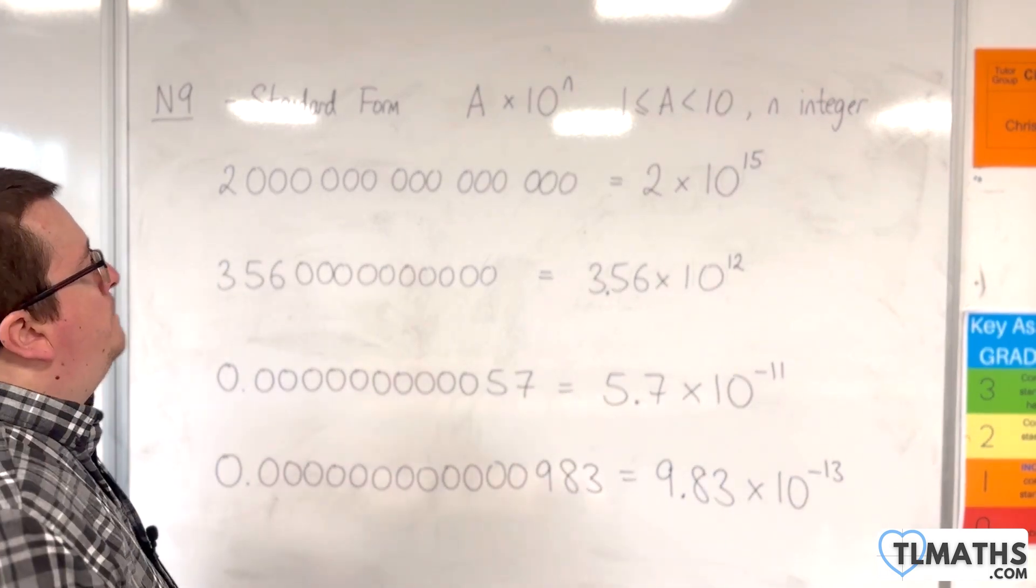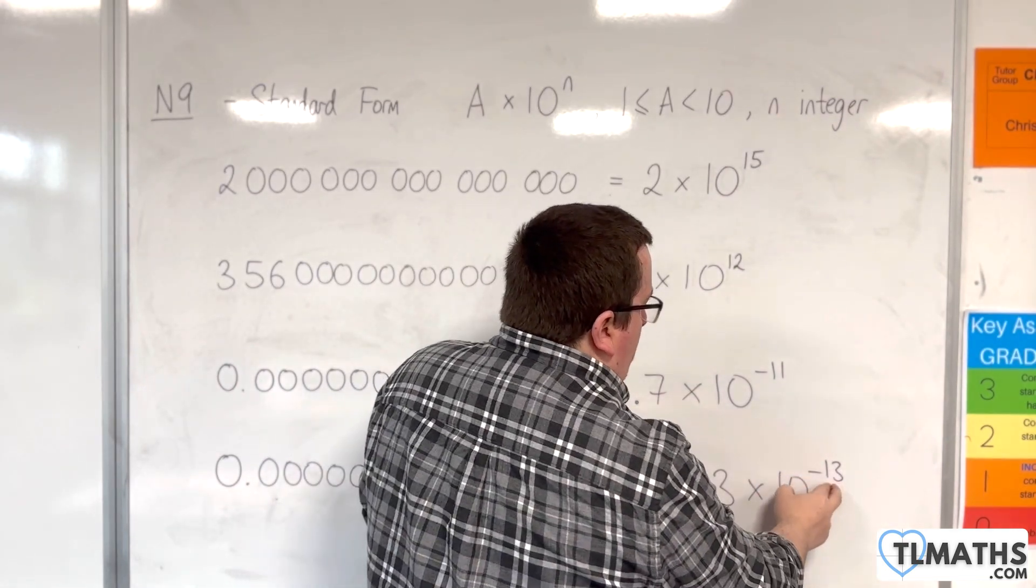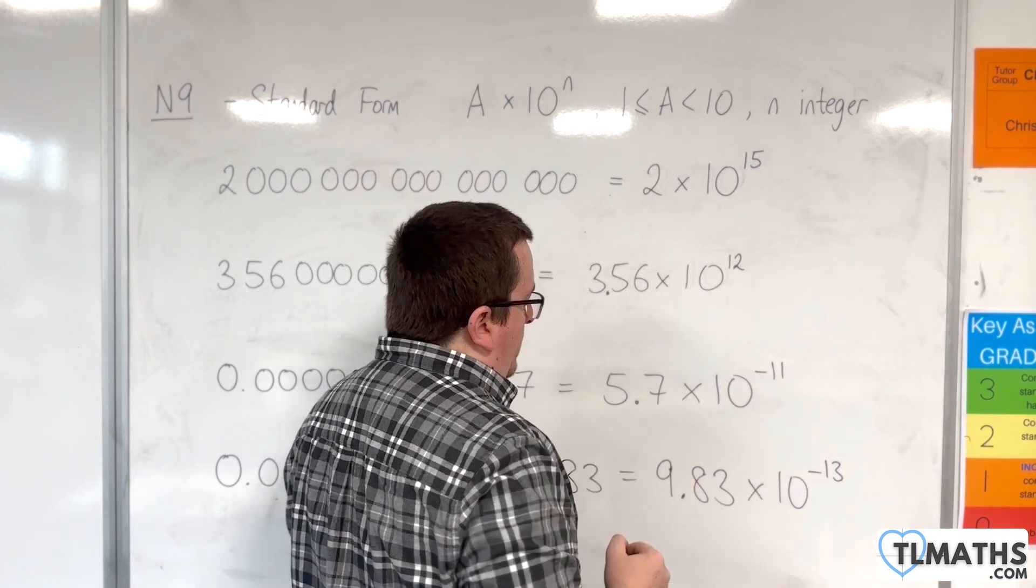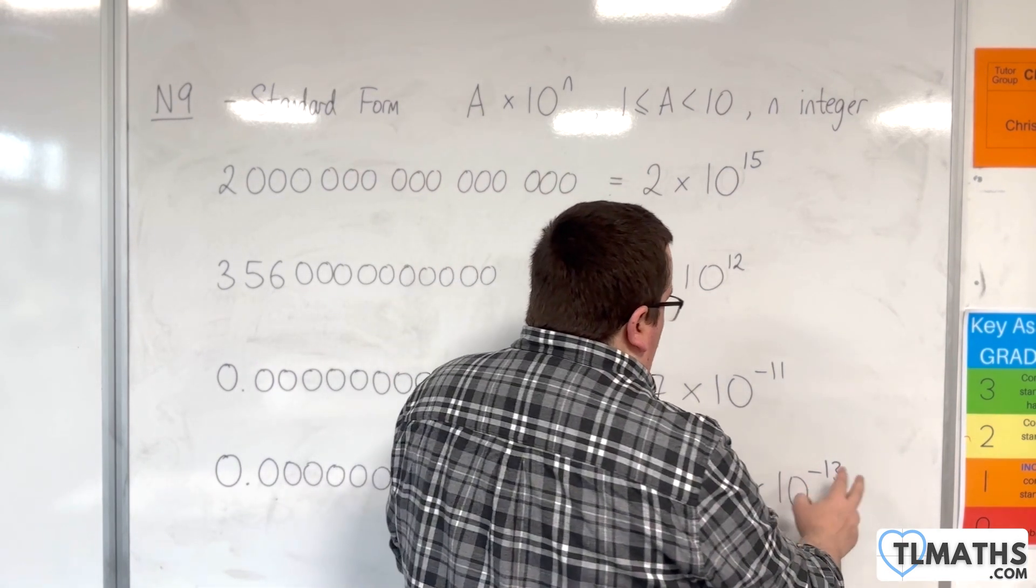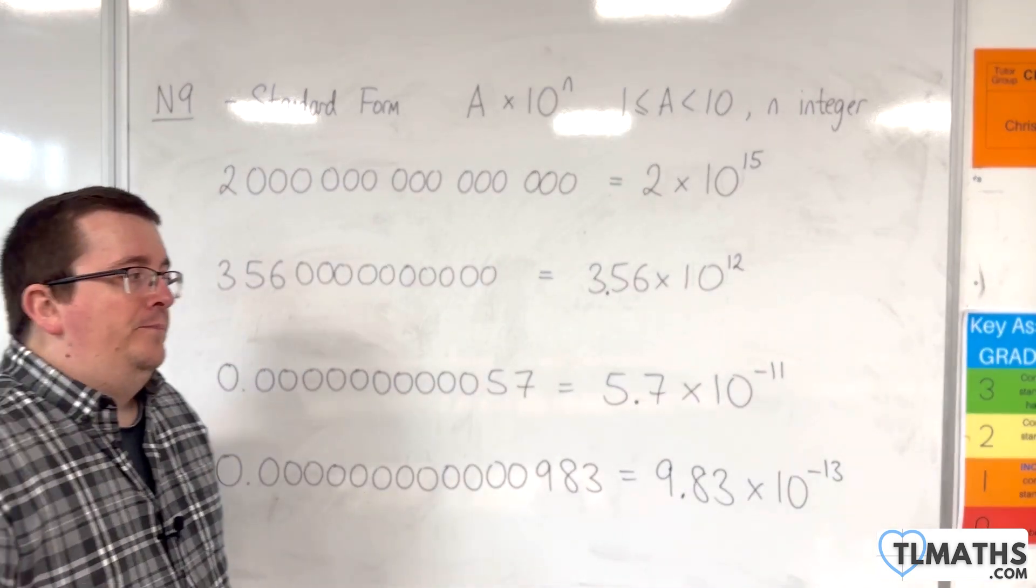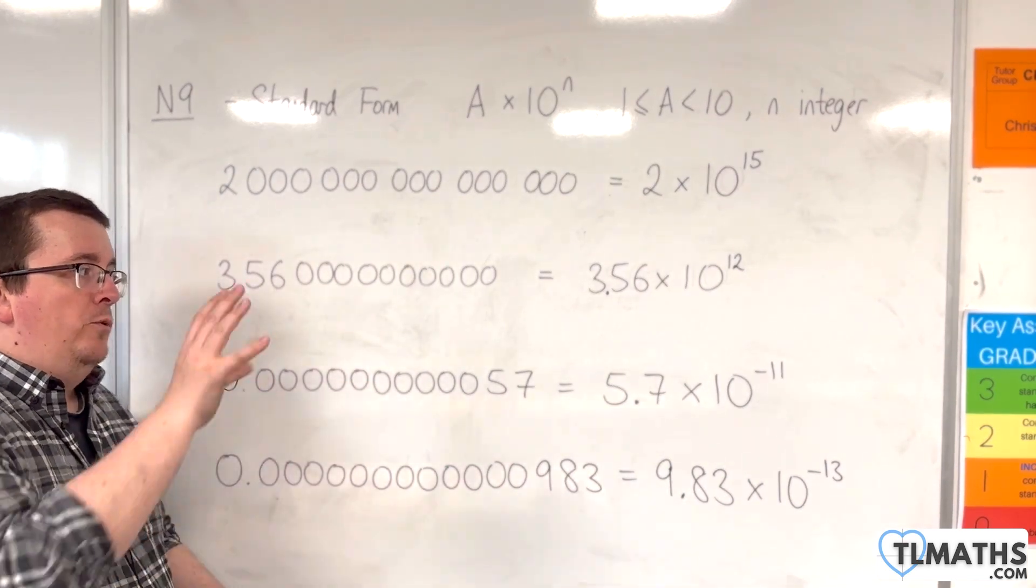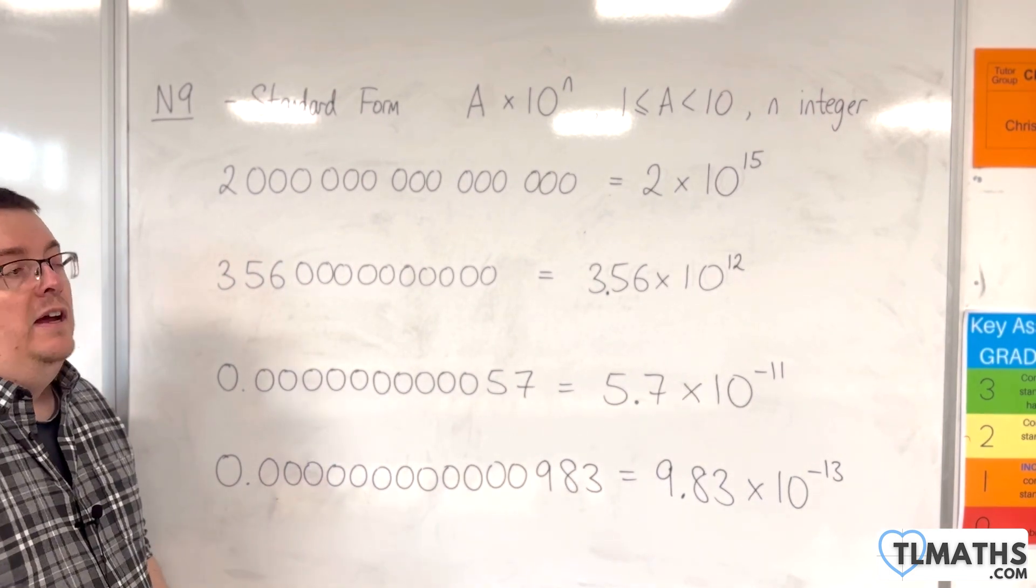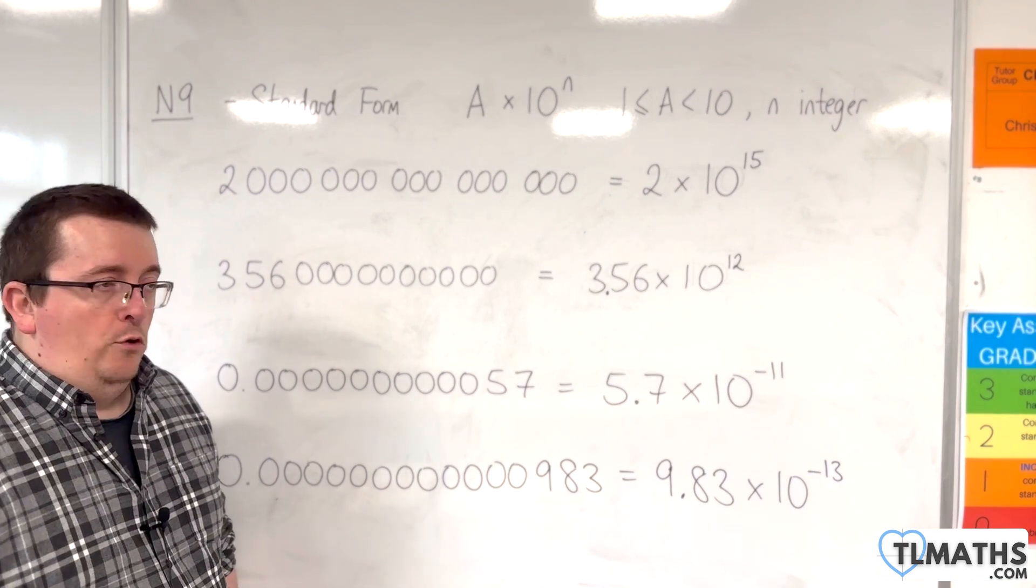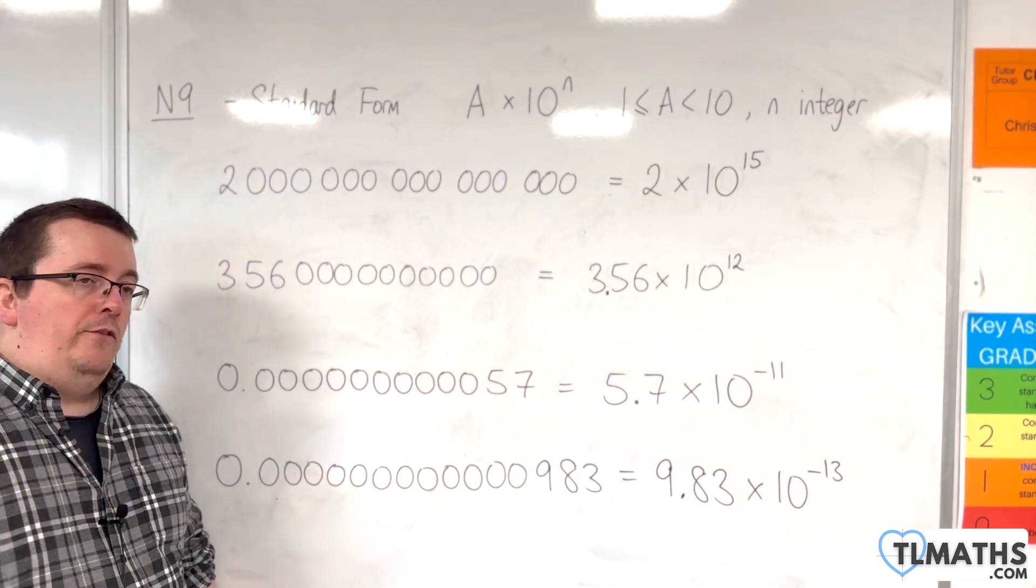It's multiplying by another 1,000 almost. It's 1,000 times larger. This one and this one, because minus 13 is less than minus 11, I know that this one's going to be smaller than this one. In fact, it's almost 100 times smaller. So that is how we can write numbers in standard form. We're going to do some more practice of this, and we're going to be looking at comparing numbers that are written in standard form as well, and trying out some calculations that involve them.